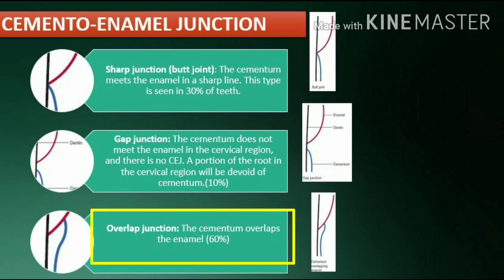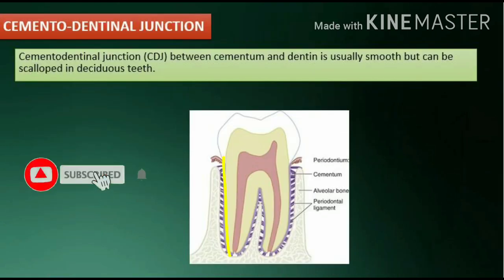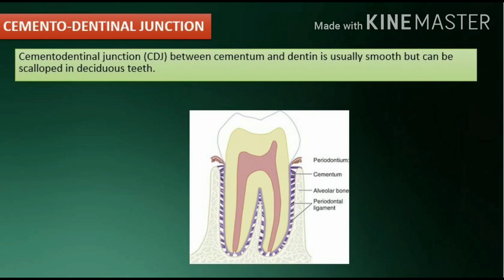Overlap junction: the cementum overlaps the enamel. Cementodentinal junction (CDJ): the junction between cementum and dentin is usually smooth but can be scalloped in deciduous teeth.